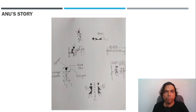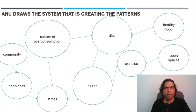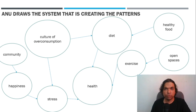Let us understand the Iceberg model with the story of Anu that we covered in episode 2. Anu observed that people in a locality were complaining about their back pain, fatigue, headaches and other chronic illnesses. She clearly saw a pattern of chronic health diseases among the people in her community. Anu understood the underlying structures that gave rise to those problems: culture of over-consumption, less open spaces to exercise, no community feeling, and compromising on the diet because of less availability of fresh vegetables.